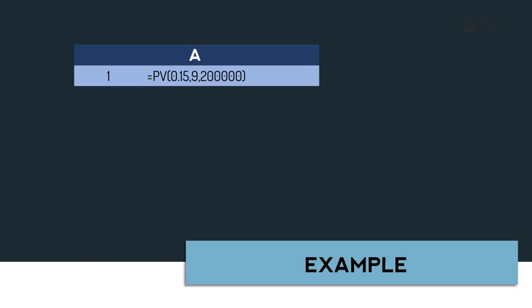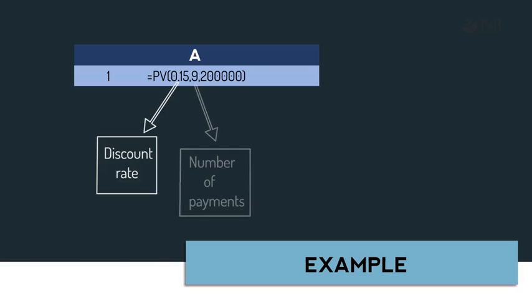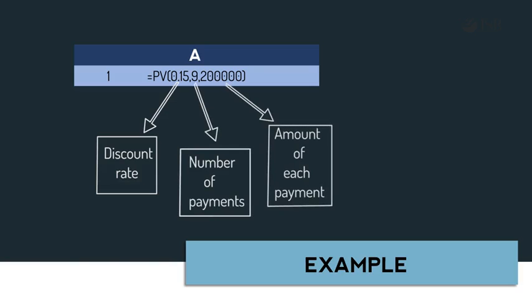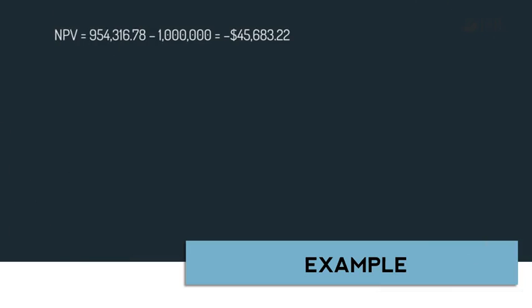We can use the PV function in Excel to calculate the present value of the ordinary annuity. The first input is the discount rate, entered as 0.15. The second input is the number of payments, which is 9. The third input is the amount of each payment, which is $200,000. The final two inputs to the PV formula are not relevant here, so we can ignore them.